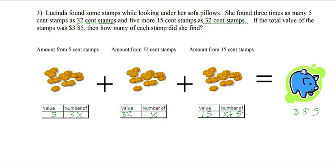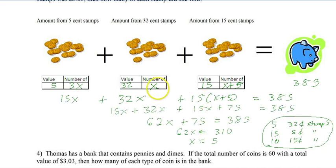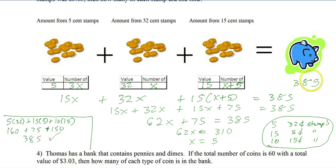So you should get five, which is the number of 32 cent stamps. There's three times as many as that. So three times five is 15 for the 5 cents. And there's five more than the five. So that's 10 of the 15 cent stamps. And then now just check it, and we get 385, which is our answer.